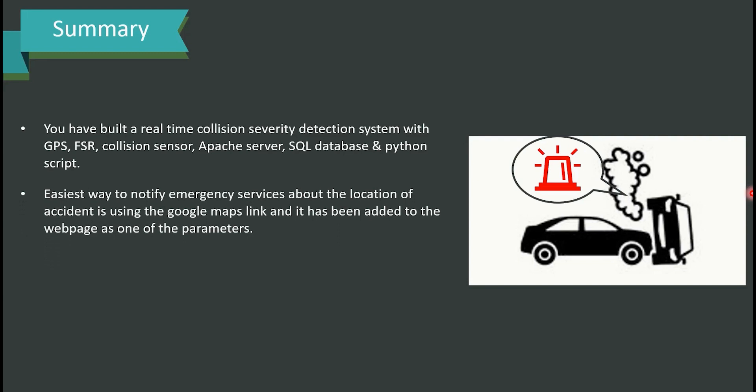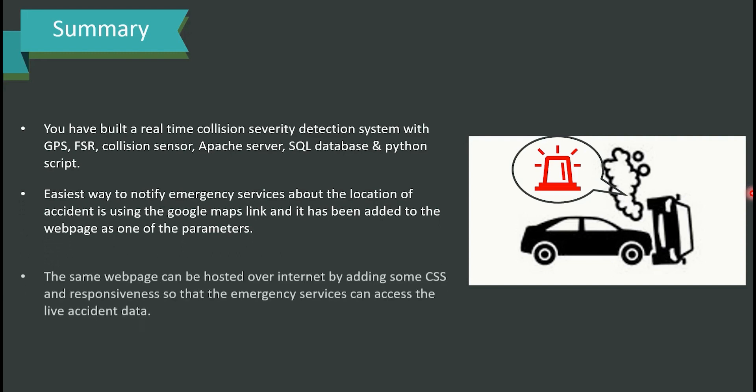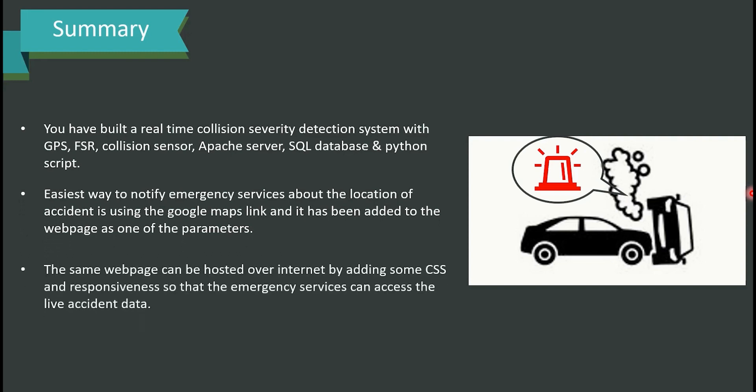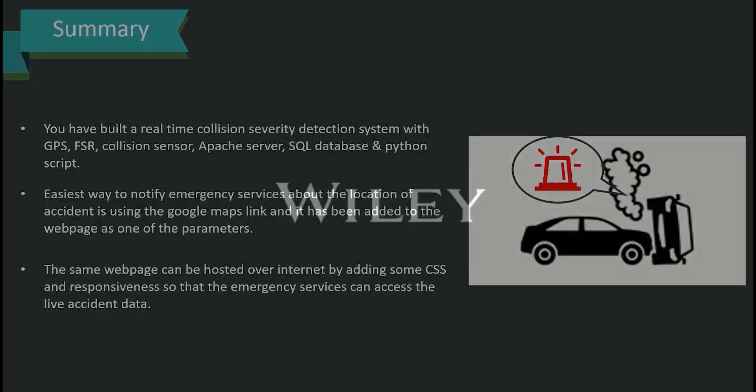The easiest way to notify emergency services about the accident location is using the Google Maps link, which has been added to the webpage as one of the parameters. The same webpage can be hosted over the internet by adding some additional CSS and responsiveness so that emergency services can access the live accident data remotely.